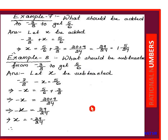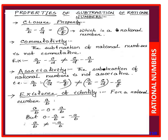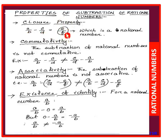Now let's learn the properties of subtraction of rational numbers. Closure property: if A/B and C/D are two rational numbers, then their subtraction gives E/F, which is also a rational number — just as with addition.